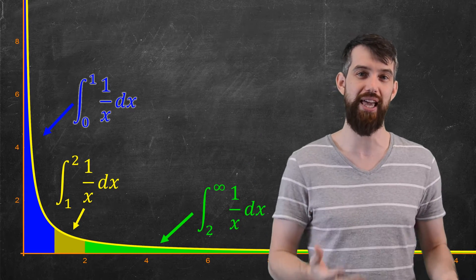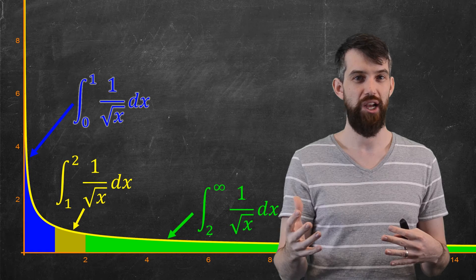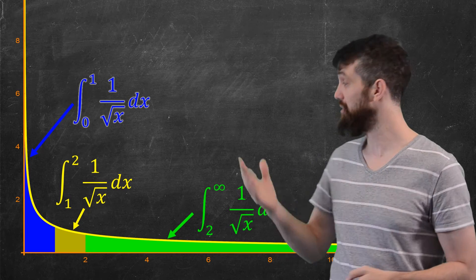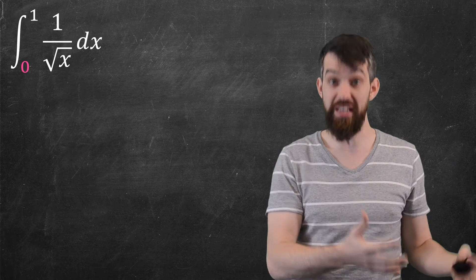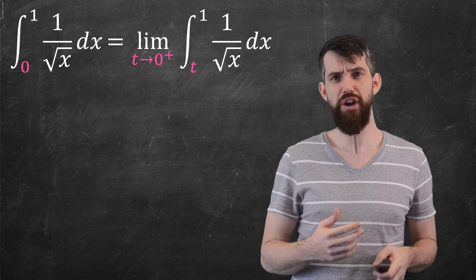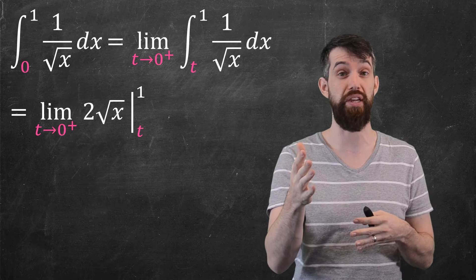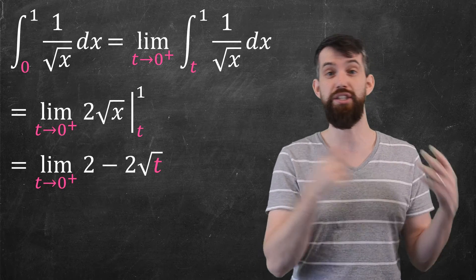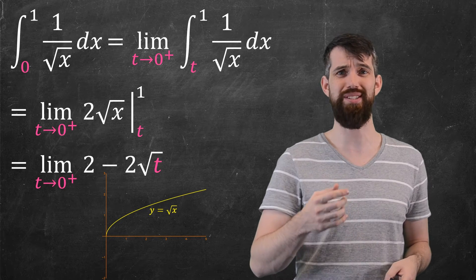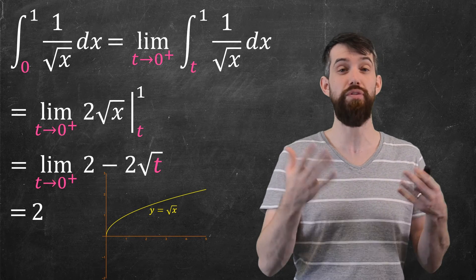Is that always the case? No. Consider 1 over the square root of x. It grows more slowly as x gets large, so the blue region is smaller. For the integral from 0 to 1 of 1 over root x dx, we take the limit as t goes to 0 from the right of the integral from t to 1 of 1 over root x dx. Using the power rule, an antiderivative is 2 times root x. Evaluating between t and 1 gives 2 minus 2 root t. As t goes to 0, root t goes to 0, leaving just 2. So this integral converges to 2.